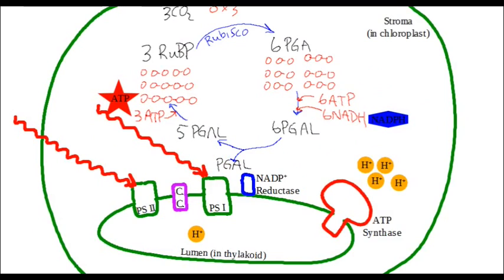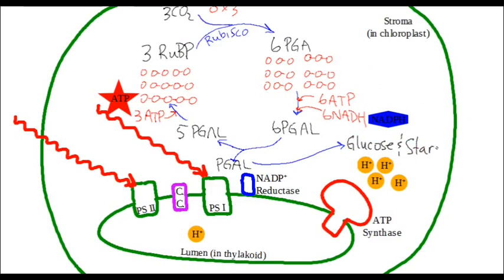Then RUBP goes ahead again and brings in three more carbons from three more carbon dioxide molecules. So the plant is continually taking in carbon, which is being used to produce this one PGAL molecule at the bottom. Three carbons in at the top, three carbons out at the bottom. When we put them together, these PGALs are going to be used by the plant to produce different types of sugars — things like glucose, things like starch — so the plant can start producing all the stored chemical energy it needs for the rest of its cellular processes. And that, in a nutshell, is how photosynthesis works.